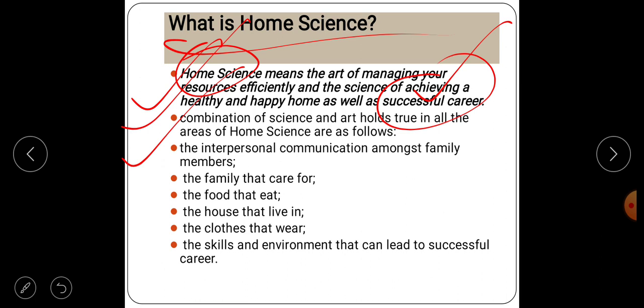I'm talking about interpersonal communication amongst family members. It is a subject which explains how to manage interpersonal communication between family members, how to care for family members' food, what to eat, how to maintain your house, clothes to wear. That is actually related to the branches. When you read about the branches in detail, you come to know about these things. The skills and environment can lead to a successful career.